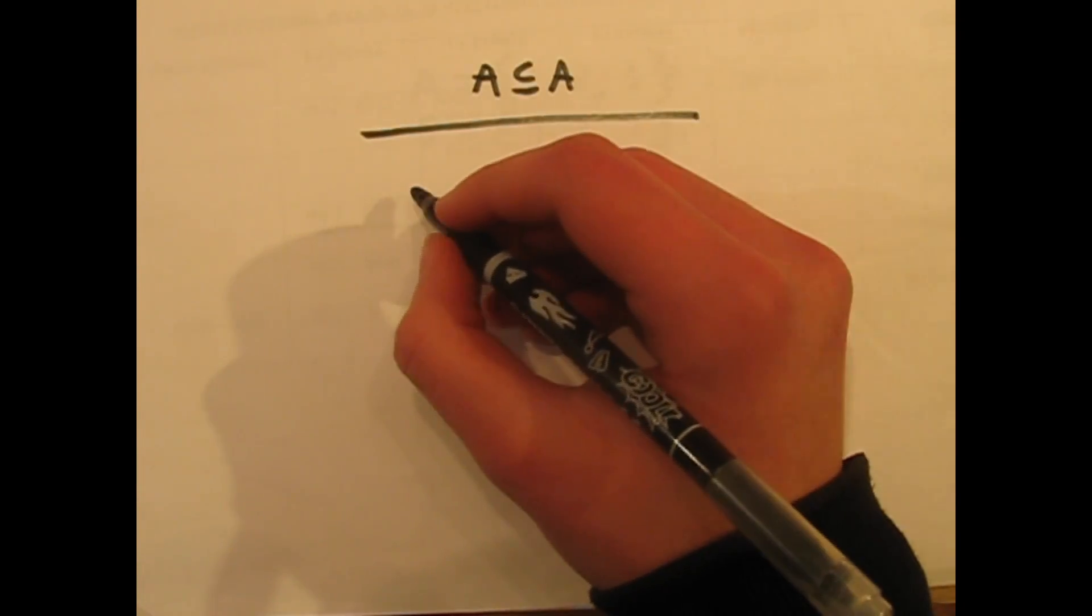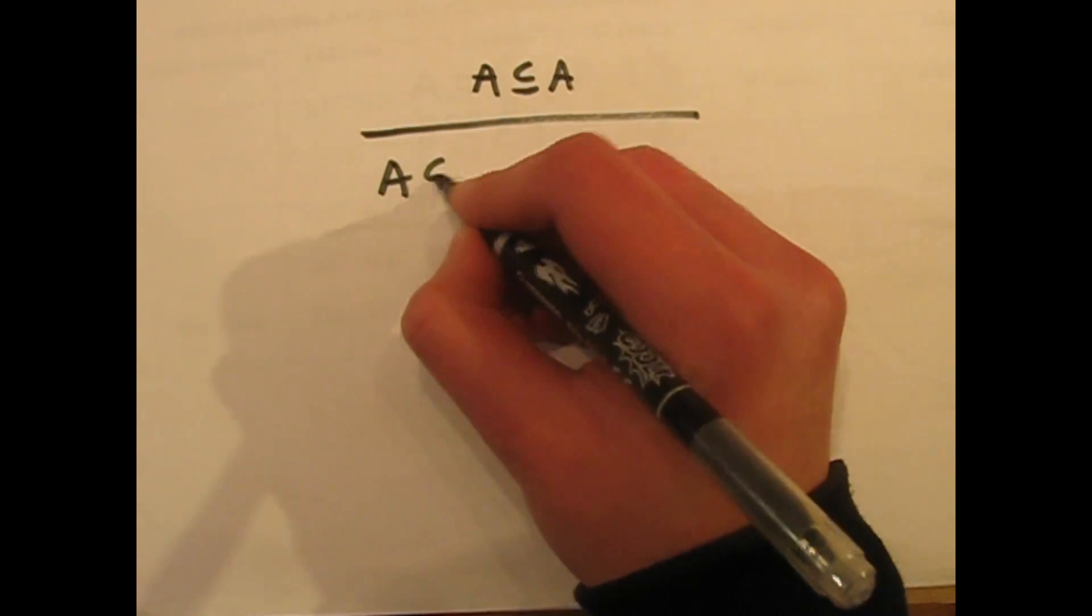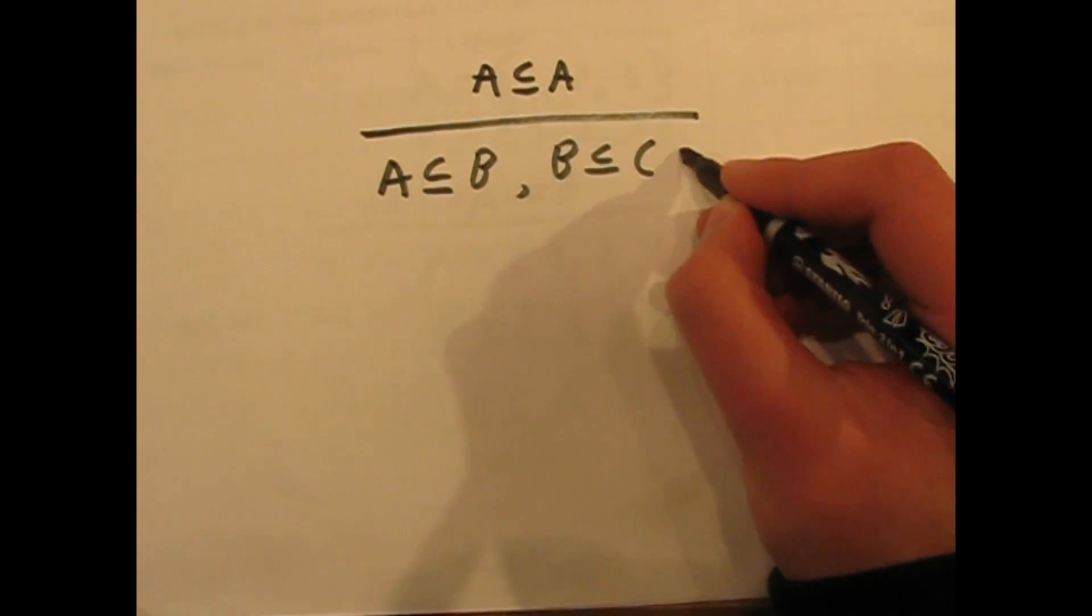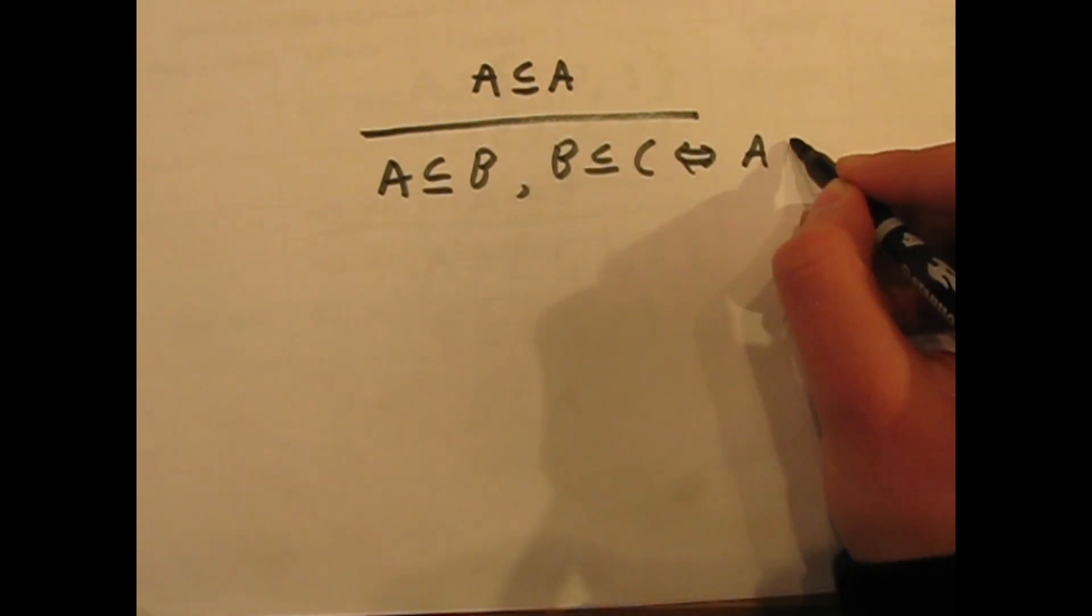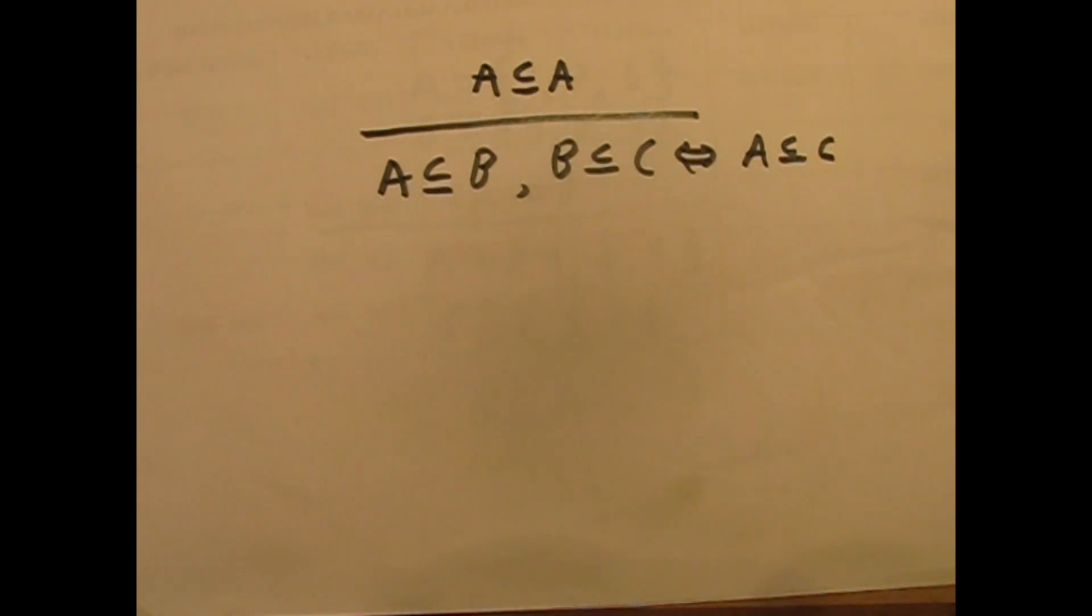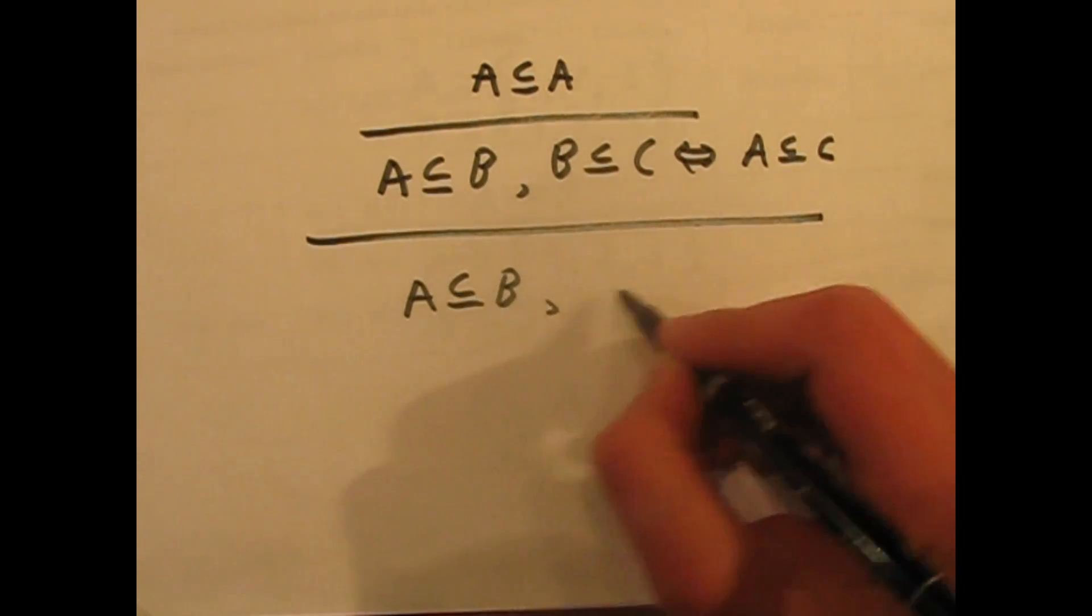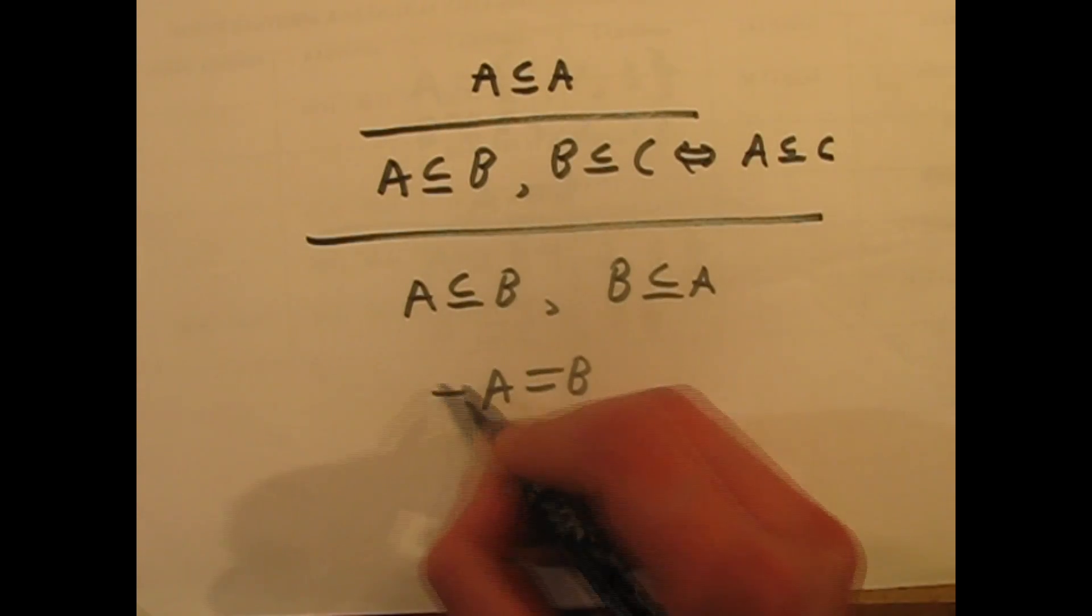Now, if a set A is a subset of another set B, which is a subset of a third set C, then we can say that A is a subset of C. Finally, if a set A is a subset of another set B and the opposite, if B is a subset of A, then A and B are equal.